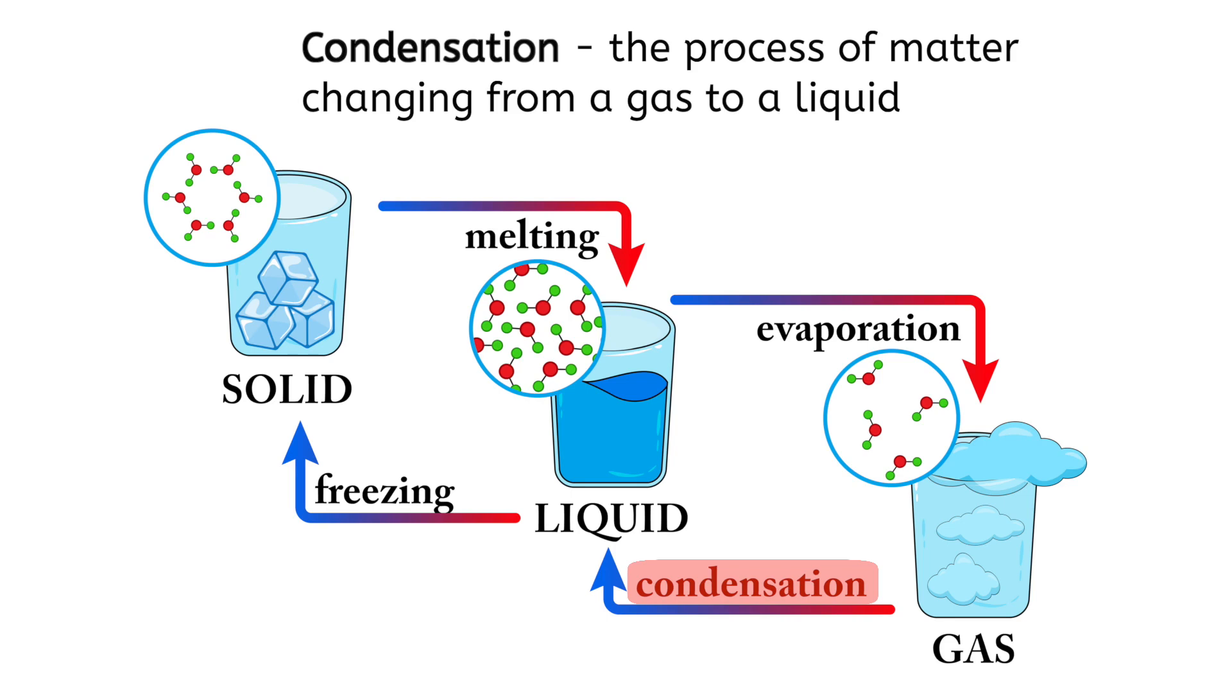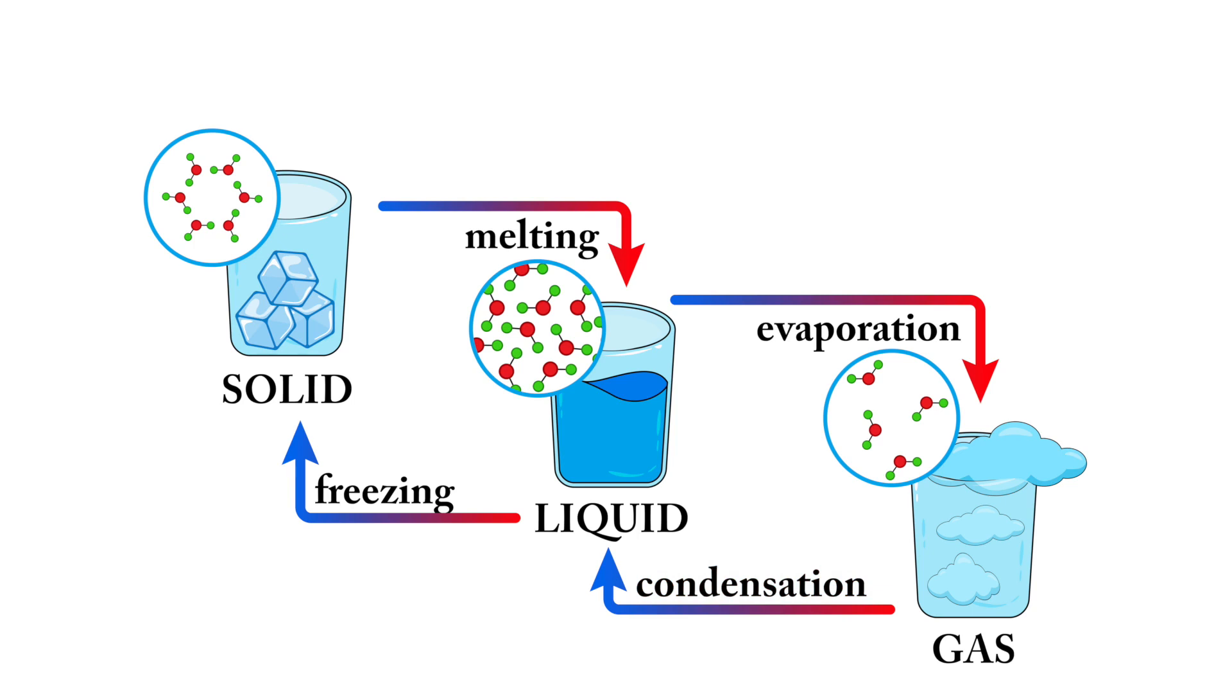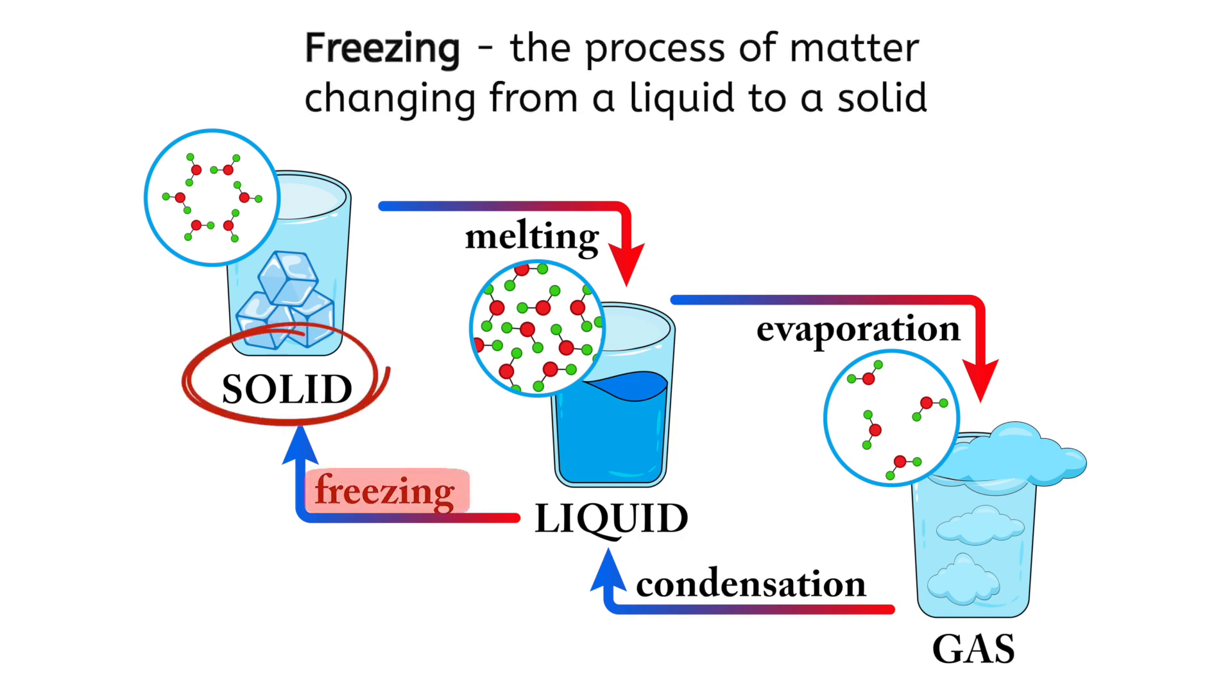Okay, let's keep cooling down that water. Now, as we cool the liquid water, the particles continue to slow down even more. Eventually, we all know what happens. It turns to ice, which is a solid. What do we call the process of a liquid turning into a solid? Freezing.